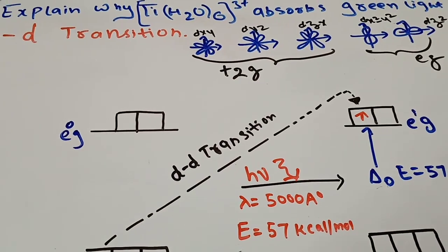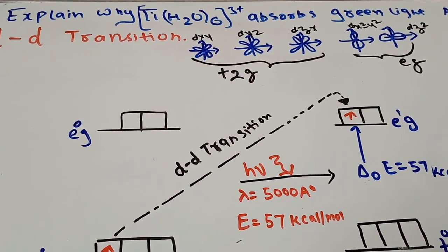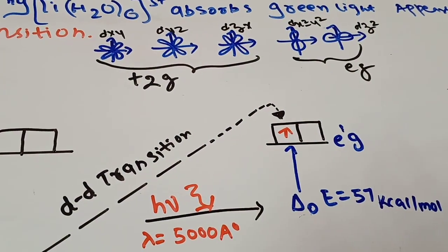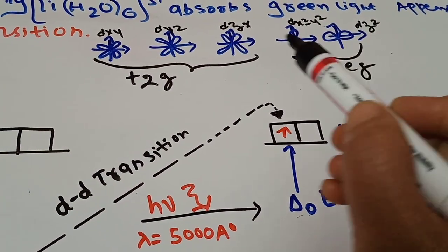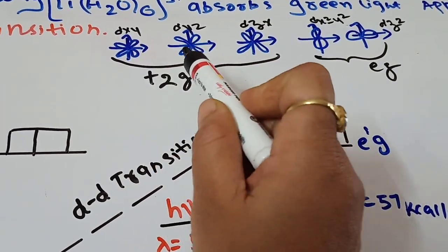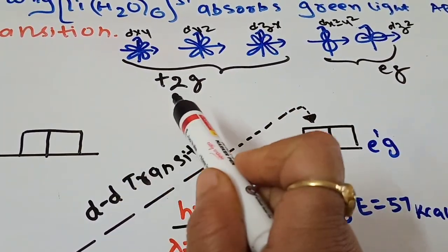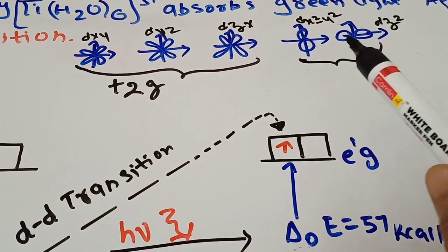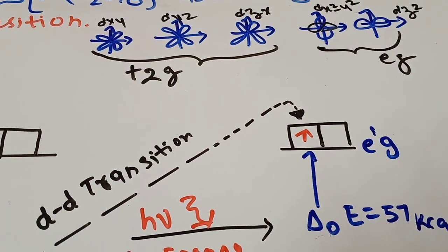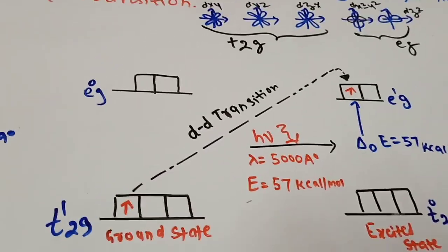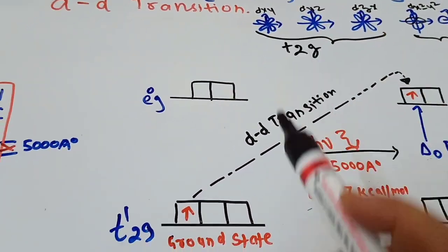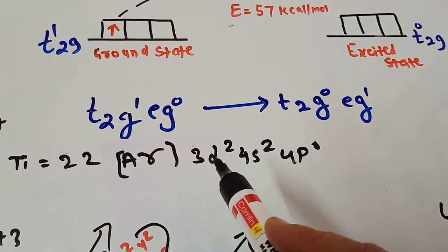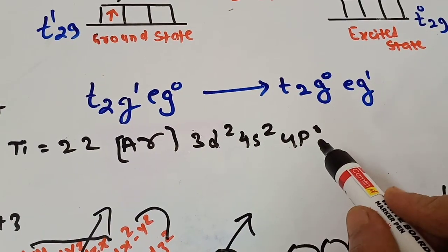I will explain D-D transitions using the Ti(H₂O)₆³⁺ complex. There are 5 D orbitals: DXY, DYZ, DZX, DX²-Y², and DZ². The first three orbitals have lobes lying between the axes — these are non-axial orbitals (T2g). The latter two have lobes on the axes — these are axial orbitals (Eg). The atomic number of titanium is 22, with configuration [Ar] 3D², 4S², 4P⁰.